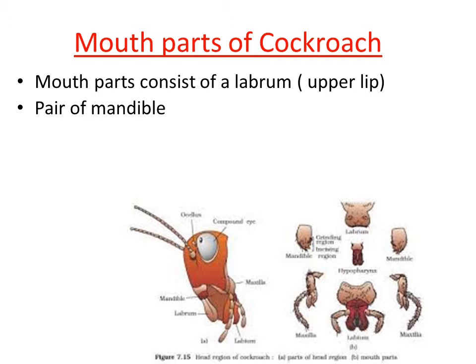That paired structure next to the labrum is named as mandible. Mandibles are the strongest mouth part in the cockroach, used for biting and chewing of food. Cockroach is omnivorous — it eats all sorts of food, both plant and animal material. When food is taken in, it is initially chewed by the mandibles. So a pair of structures present for biting and chewing are named as mandible.